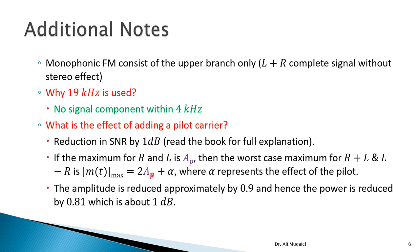If the maximum amplitude of the right and left audio signals is A_p, then the worst case maximum of both combined would be double that, assuming they are totally different. We also have the additional pilot component alpha. To avoid clipping the peak, the amplitude will be reduced to about 90 percent, and hence the power will be reduced to about 81 percent (since power is proportional to amplitude squared, 0.9² = 0.81). In decibels, 0.81 is approximately negative one dB — so we lose one dB of power to the pilot instead of putting it in the message.